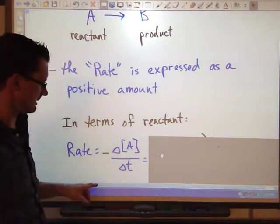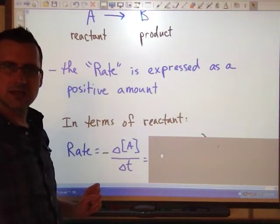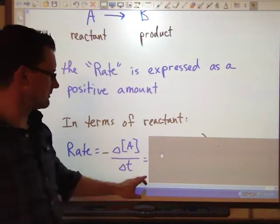If I take my final amount minus my initial amount, I'm going to get a negative number. I don't want that. So by putting that negative in front, I'm going to be taking the negative of a negative and get a positive rate overall.